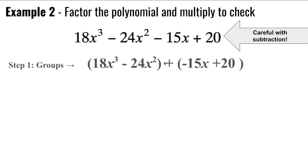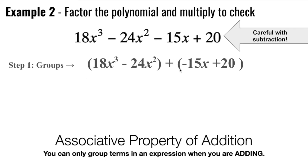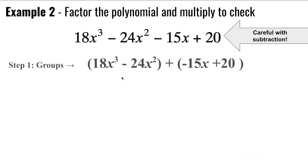And the reason why we have to do that is you can only put groups in an expression that is a sum, that has addition. So we're essentially taking that negative and putting it with the second binomial. Now we find the greatest common factor.